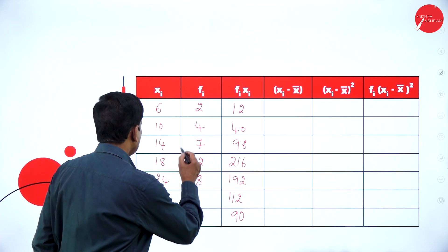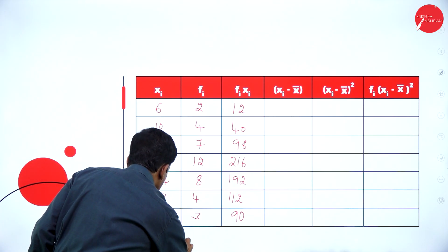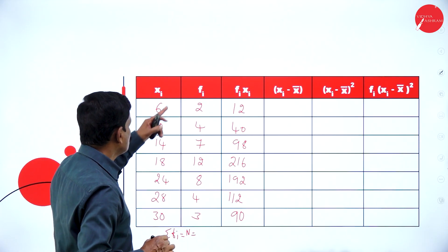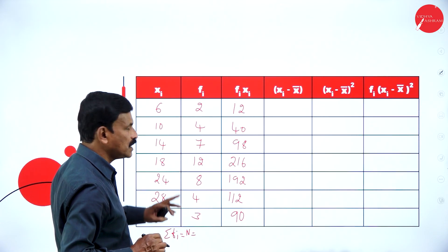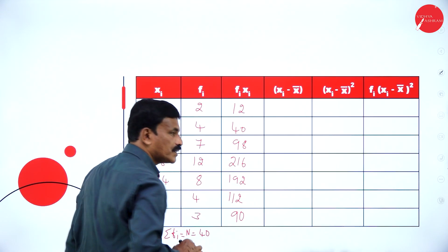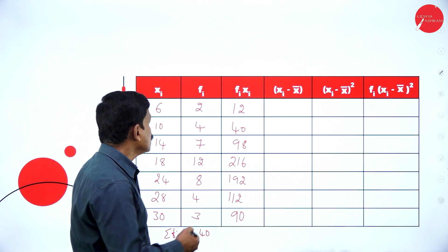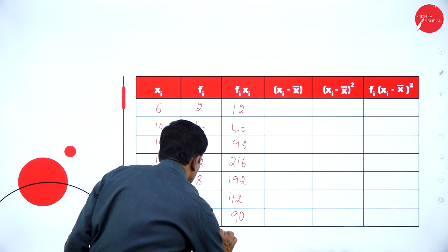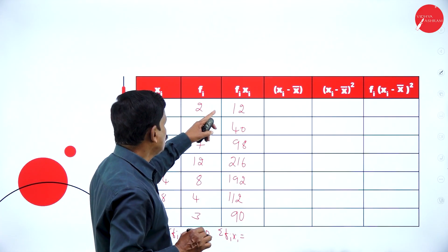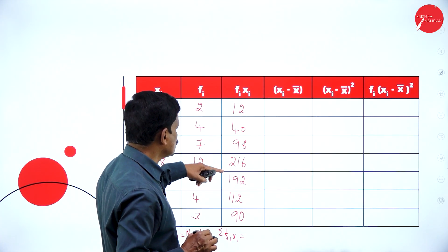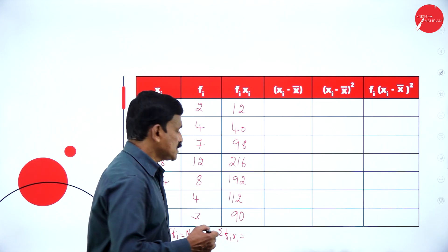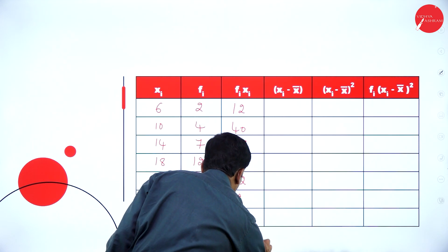Add sigma fi — sigma fi is equal to n, capital N. Add: 2 plus 4 plus 7 plus 12 plus 8 plus 3 is equal to 40, so n is equal to 40. Now add sigma fi xi. If I add 12 plus 40 plus 98 plus 216 plus 192 plus 112 plus 90, that is equal to 760.